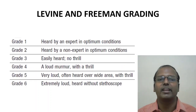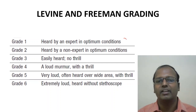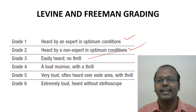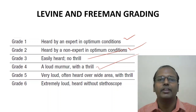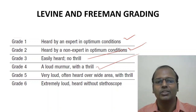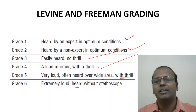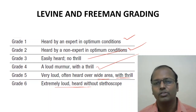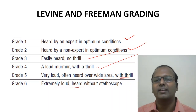Murmur grading uses the Levine and Freeman grading system with 6 grades. Grade 1 is heard only by an expert. Grade 2 is faint but audible. Grade 3 is easily heard without thrill. Grade 4 is loud with a thrill — very important: if you detect a thrill on palpation, the murmur is grade 4/6. Grade 5 is very loud with thrill, heard over a wide area. Grade 6 is extremely loud, audible even without the stethoscope touching the skin.